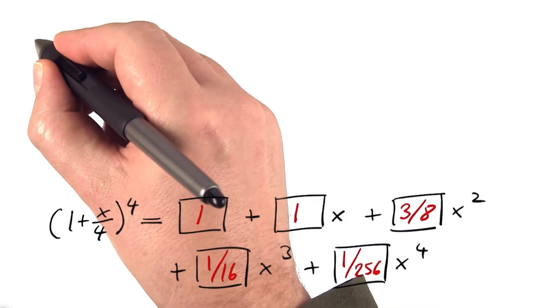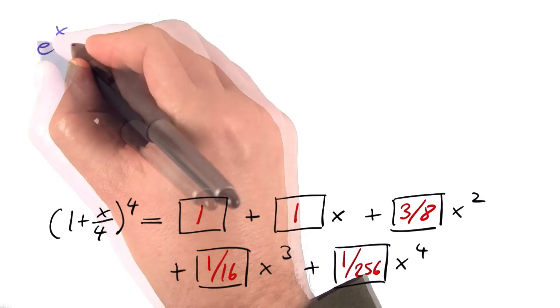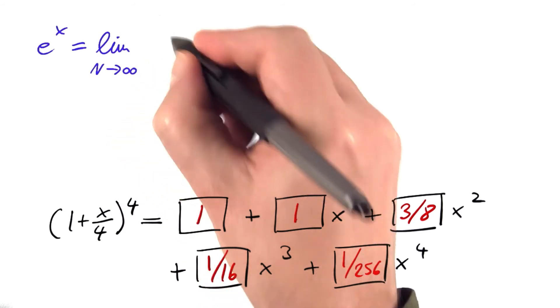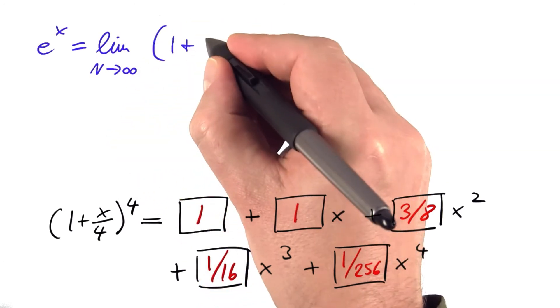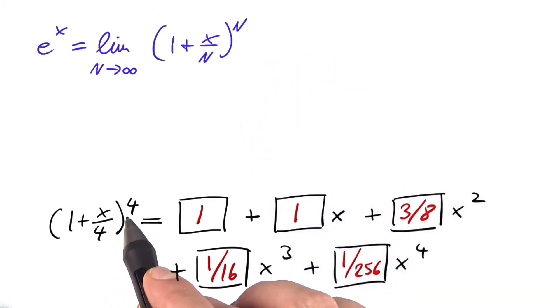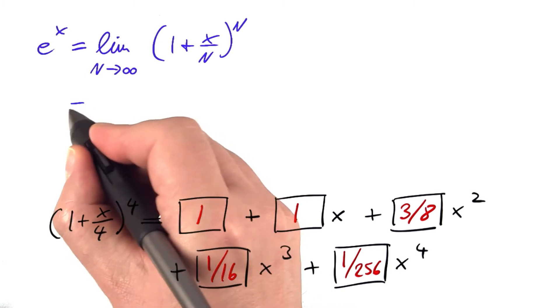Let me restate the general equation for the exponential function again: e^x is the limit as n goes to infinity of (1 + x/n)^n. We have now looked at the special case of n equals 4. Hopefully, you can imagine that this also works out for 40 or 400, 4000, 4 billion, for whichever number.